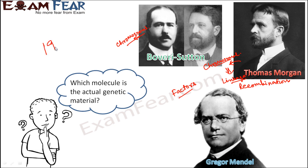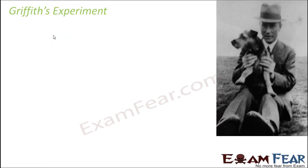It was in the year 1926 that the mechanism of genetic inheritance reached a molecular level. Scientists started performing experiments to understand which molecule is responsible for genetic inheritance. In 1926, there was a scientist named Griffith who performed this experiment, now popularly known as Griffith's experiment. Let us see what Griffith did in his experiment.